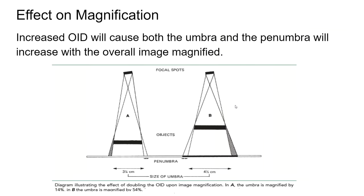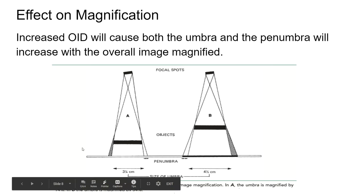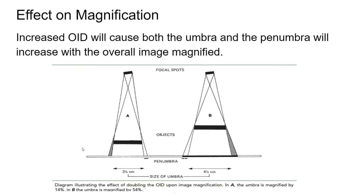So here's our effect of OID on magnification. We can see B has an increase. Not only is our penumbra getting bigger, but now we've increased from three and a quarter in this example to four and a half. The umbra ends up getting magnified. Remember, umbra versus penumbra - umbra is the middle, and penumbra is the blur around the umbra. So they're both going to increase.